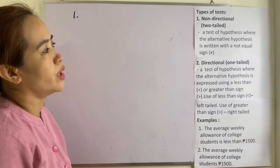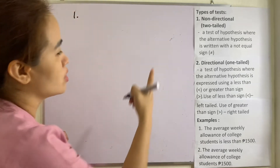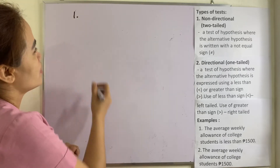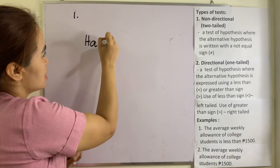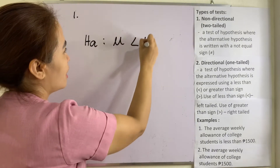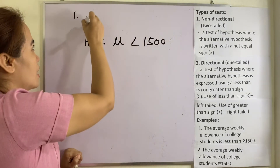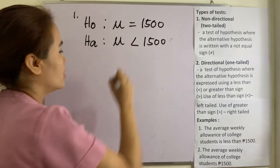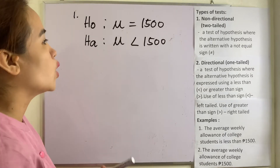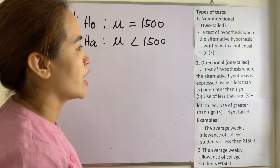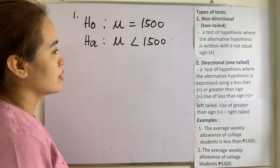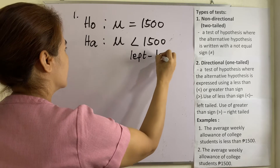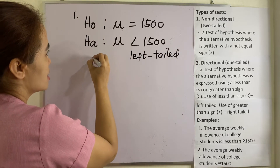Let us determine whether the given hypothesis is directional or non-directional. Number one: the average weekly allowance of college students is less than 1,500. That is the alternative hypothesis expressed as less than 1,500. The null hypothesis would be equal to 1,500. Since the alternative uses less than, this is a one-tailed hypothesis — specifically left-tailed.